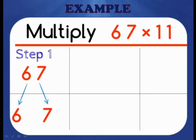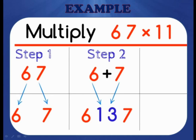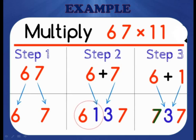Here, I am going to multiply 67 into 11. First, we separate the digits of 67 by leaving a gap in between. Then we add the digits: 6 plus 7 equals 13. As 13 is more than 10, we cannot place it in the middle of the number. So, we add the first digit and the carry: 6 plus 1 equals 7. Then we replace the first digit with 7 and we get the answer 737.